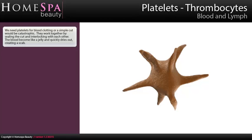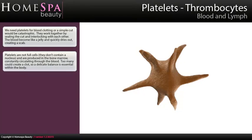Platelets. We need platelets for blood clotting, or a simple cut would be catastrophic. They work together by sealing the cut and interlocking with each other. The blood becomes like a jelly and quickly dries out, creating a scab. Platelets are not full cells — they don't contain a nucleus — and are produced in the bone marrow, constantly circulating through the blood. Too many could create a clot, so a delicate balance is essential within the body.